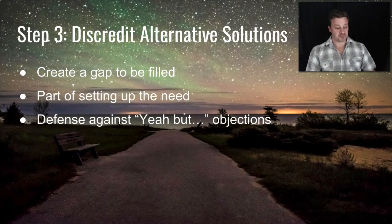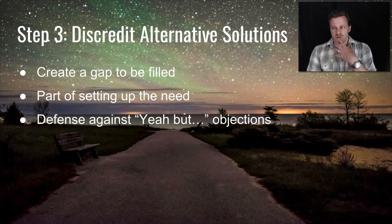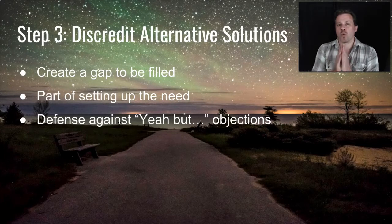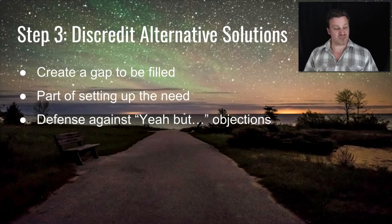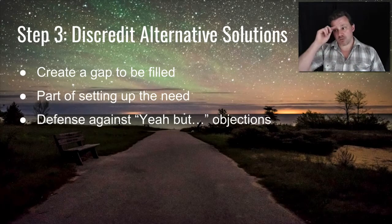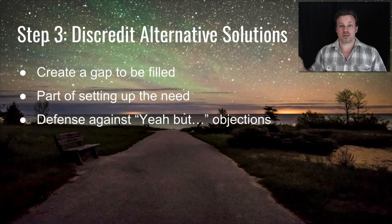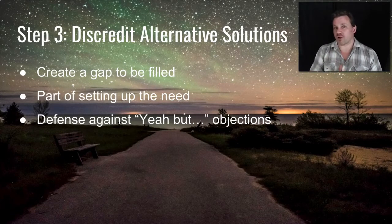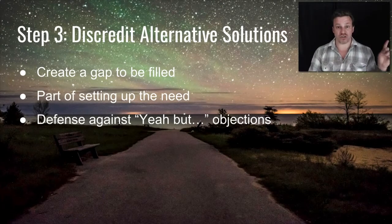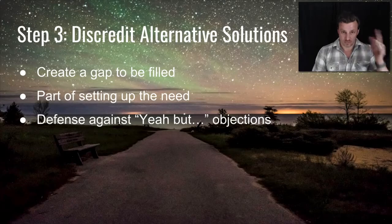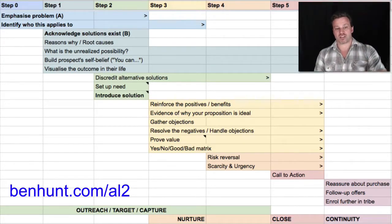You have to acknowledge other solutions exist, and then explain why they don't quite do what you need them to do — in order to set up the need. We are creating a shape of something you need before we proceed to supply it. It's also a defence against yeah-but objections. One very common objection is 'hey, we've got this — that says it works.' It only takes one objection for somebody to take themselves off the hook: 'I don't need to listen to your thing anymore because I've got this thought in my head and you haven't answered it.' You can do everything else right, but if somebody has an objection you don't handle, that could be enough to lose that prospect — and very often you won't even know.